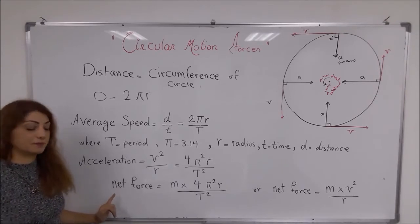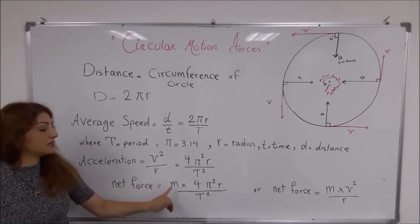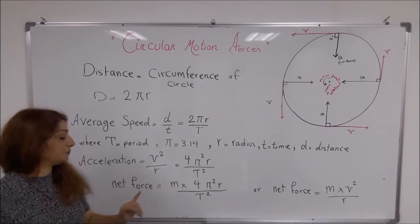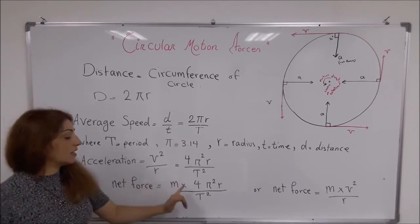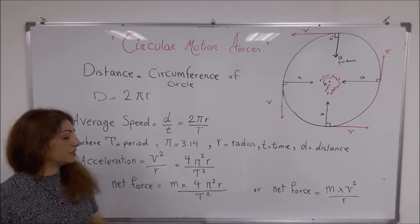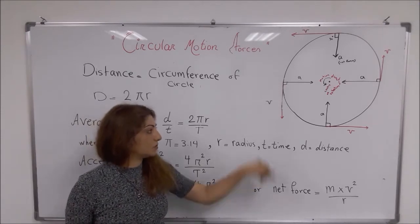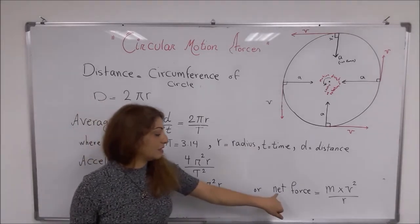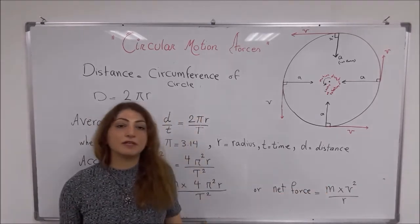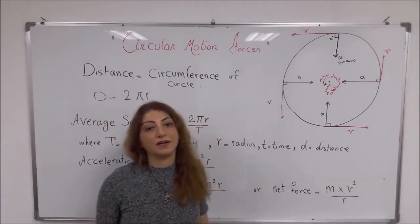Then we have the net force. To find the net force, you need the mass of the object, the radius, and the period or time. It is: mass times 4π²r divided by T squared. Don't forget, T is the period — the time taken for the object to complete one full revolution around the circular path. The net force can also be calculated as mass times v² divided by r, if you have velocity, radius, and mass.